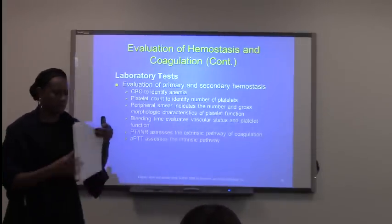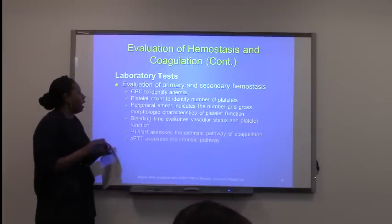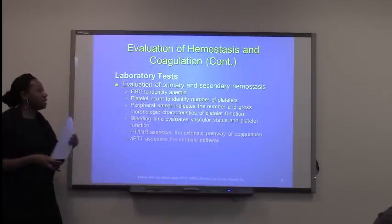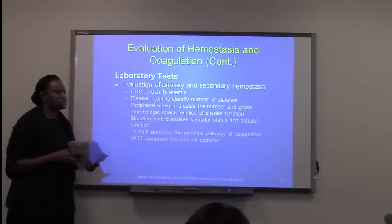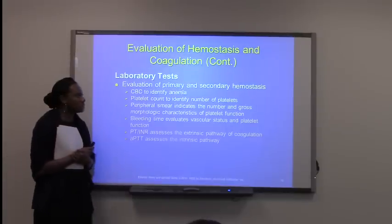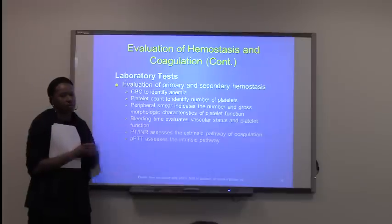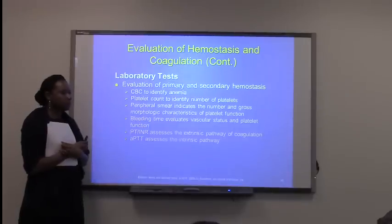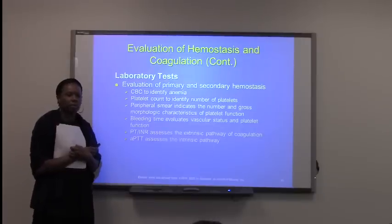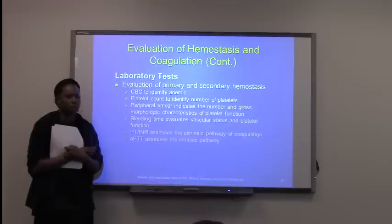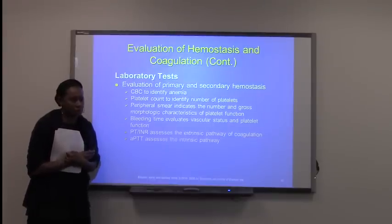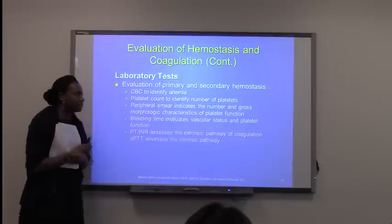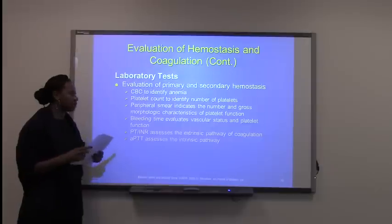For laboratory testing, the first thing is to look at the CBC to identify anemia. You also want to assess platelet count. This can be done through a peripheral blood smear — the same type we looked at with leukemias. Platelets are difficult to identify because they almost look like cell fragments, but you can assess both the number and shape of platelets.